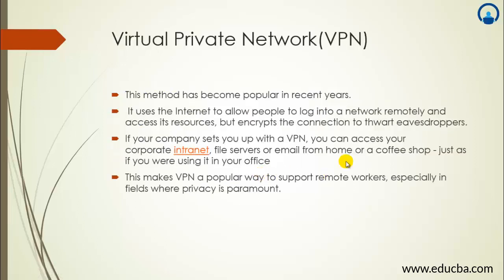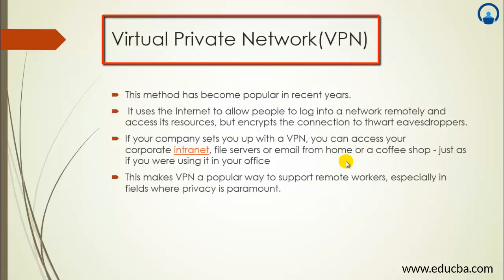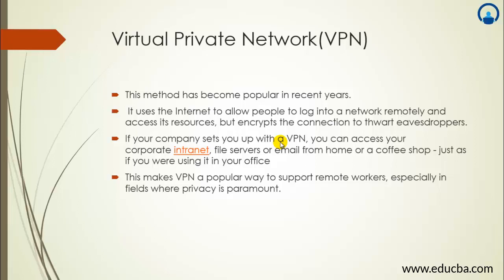The fourth type of network is VPN, the Virtual Private Network. This method has become popular in recent years because as we use more internet, the risk of viruses and malware increases. VPN allows people to log into a network remotely and access its resources while encrypting the connection so that hackers cannot eavesdrop. If a company sets you up with a VPN, you can access your corporate intranet, file services, or email from home or a coffee shop just as if you were in the office.